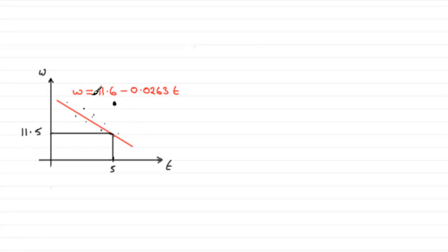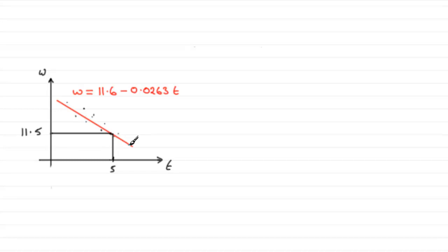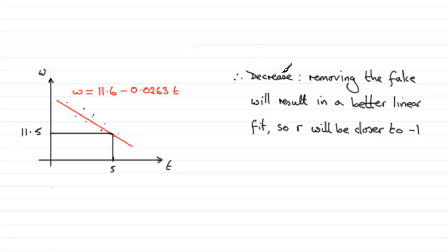When we worked out the product moment correlation coefficient, it's going to be a negative value, as we worked out. But if we remove that coin, we now end up with fewer points — one less — but closer to the line. Since the line has a negative gradient, if the points were on the line the PMCC would be minus 1. So we can't expect it to be minus 1, but it's certainly going to get closer to minus 1. Removing the fake coin will result in a better linear fit, so R will be closer to minus 1.